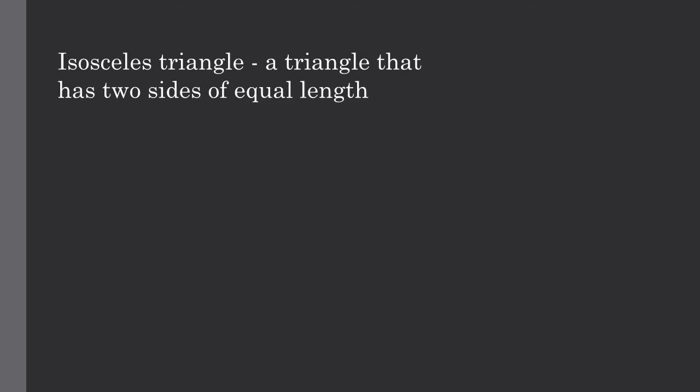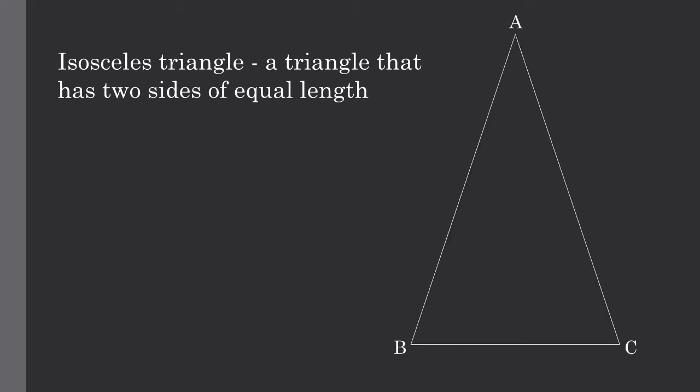Next, we are going to talk about what an isosceles triangle is. An isosceles triangle is a triangle that has two sides of equal length, meaning that if we have triangle ABC, side AB will equal side AC.